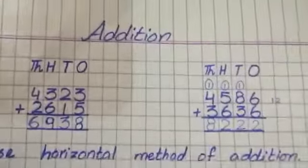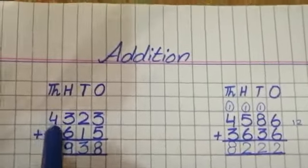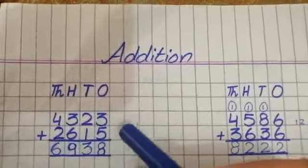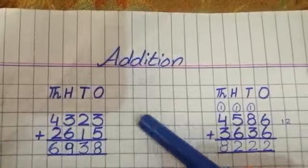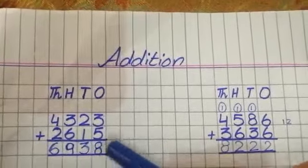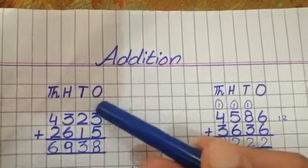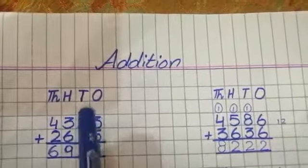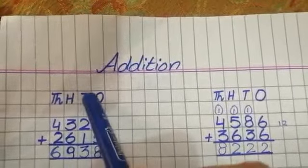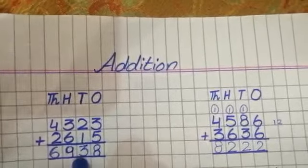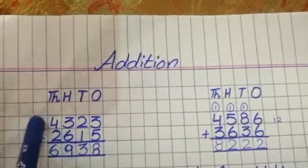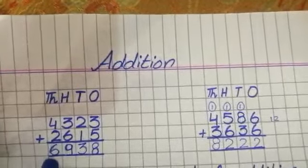Now we do some questions. Question number 1: 4,323 plus 2,615. We start from 1's house, from right side. First number is 3 plus 5, 3 plus 5 is equal to 8. Then 10's house: 2 plus 1 is equal to 3. Next is 3 plus 6 is equal to 9. 4 plus 2 is equal to 6.